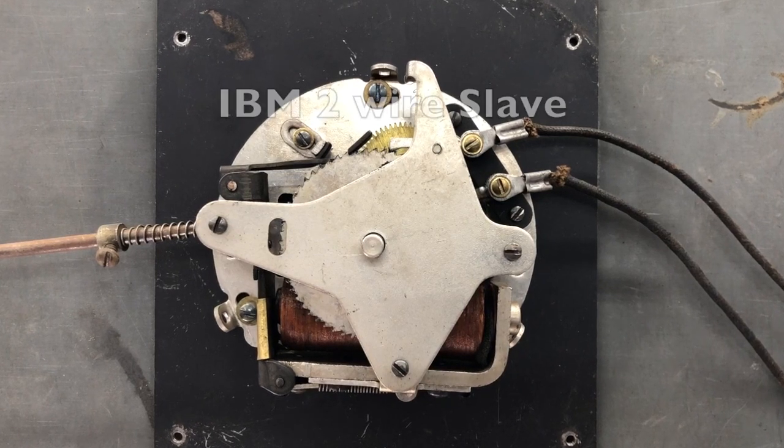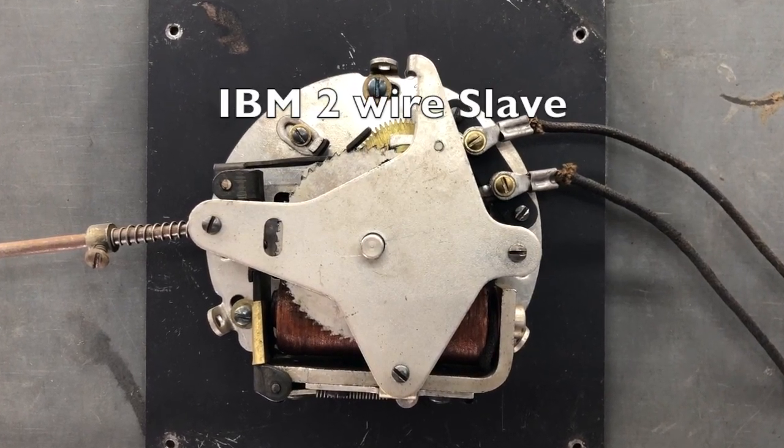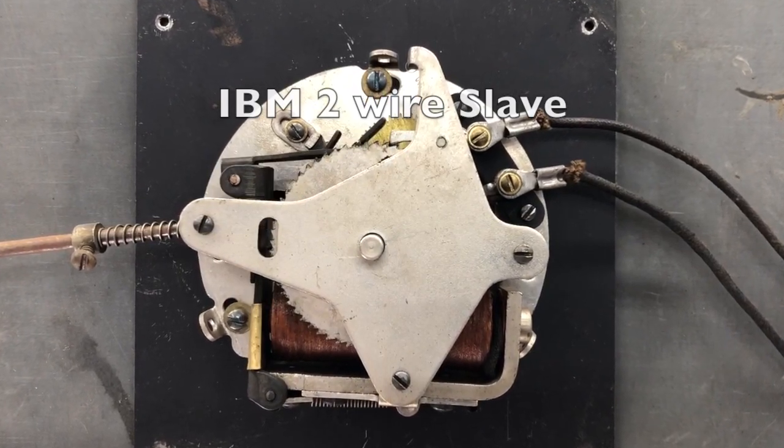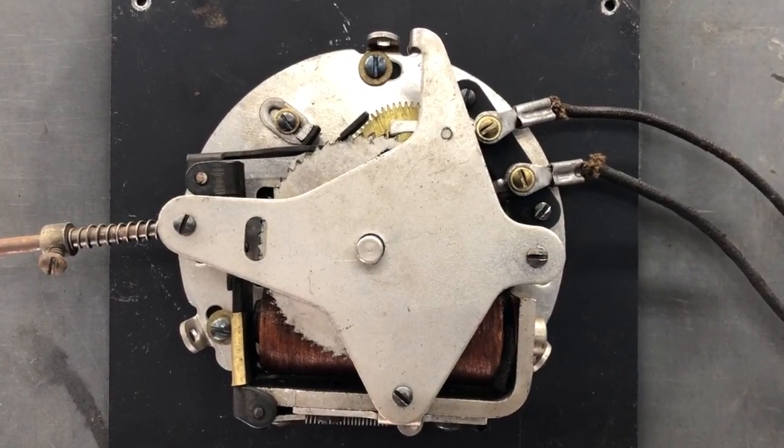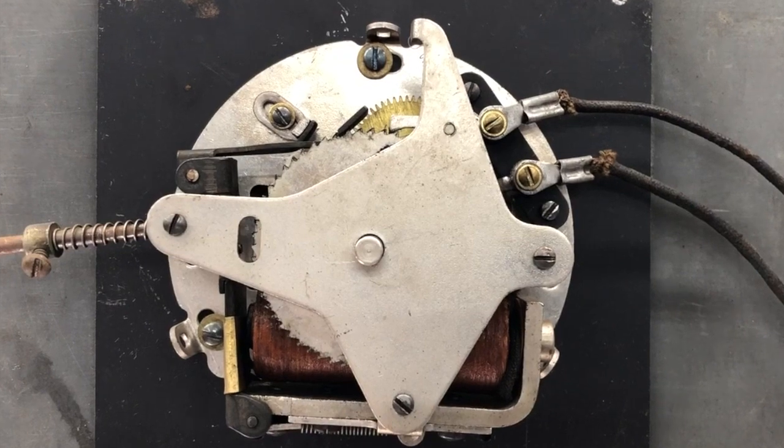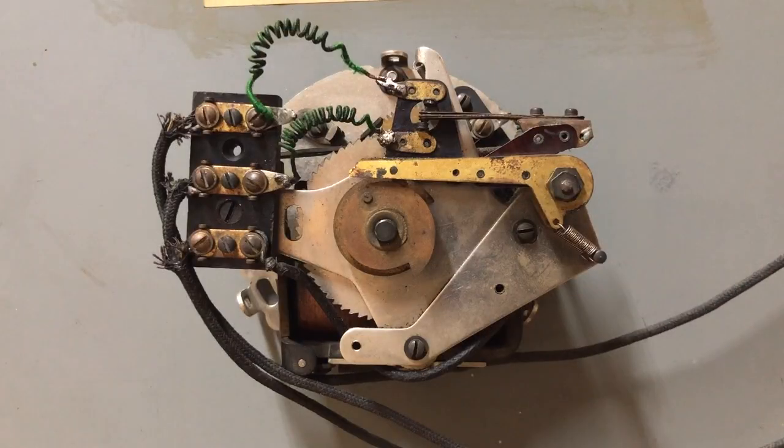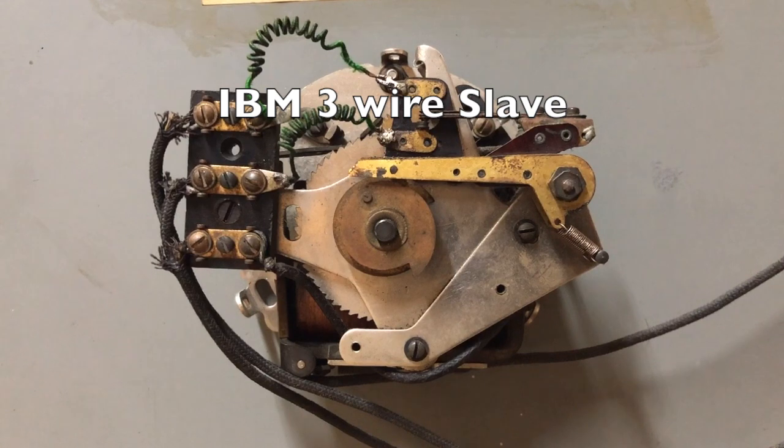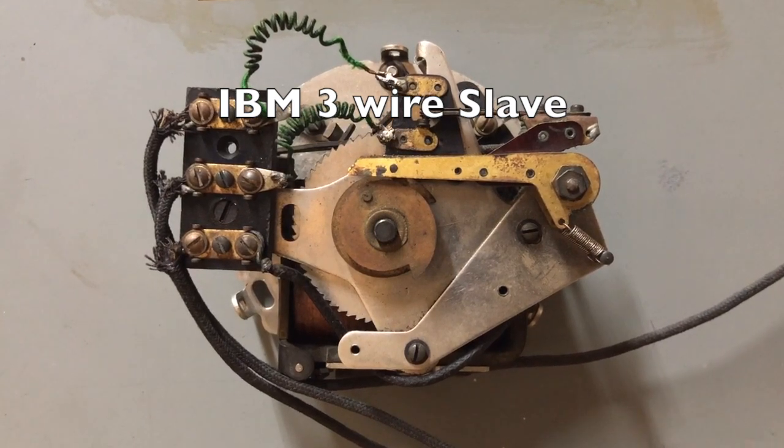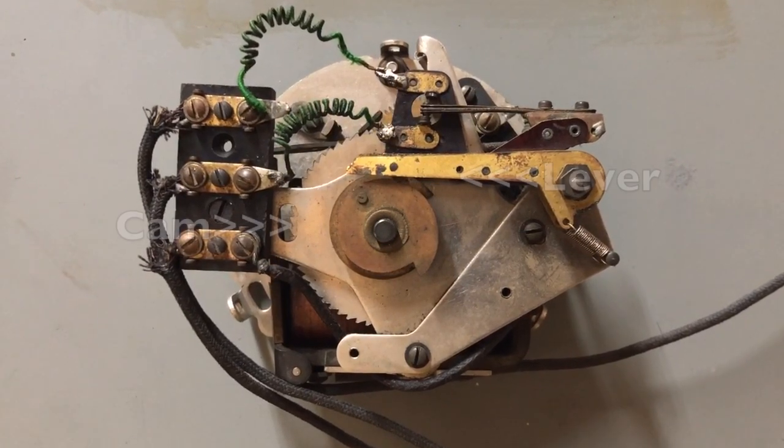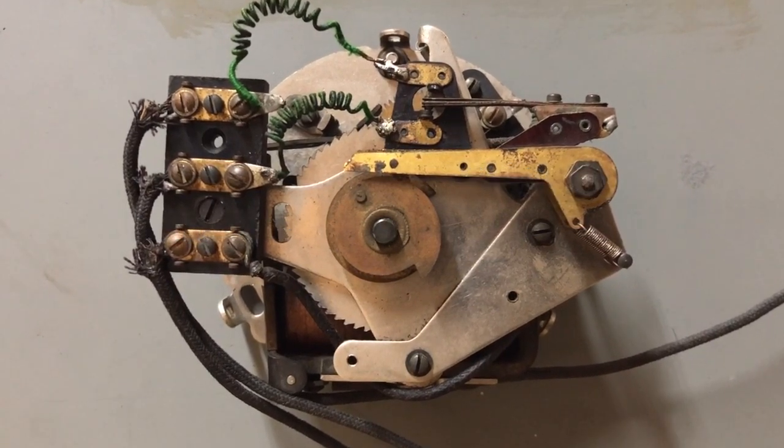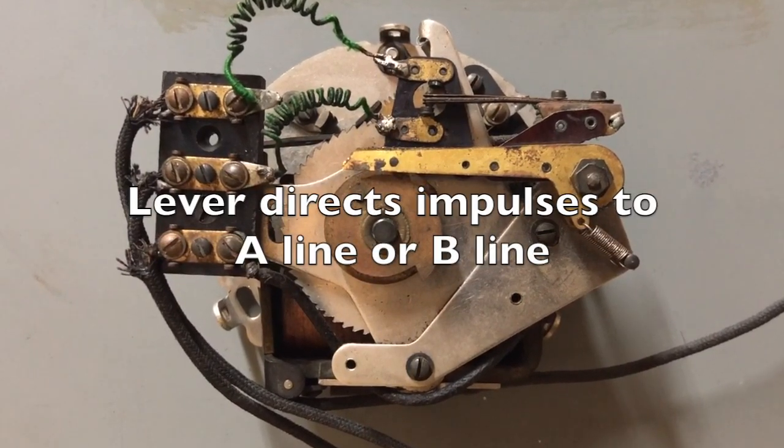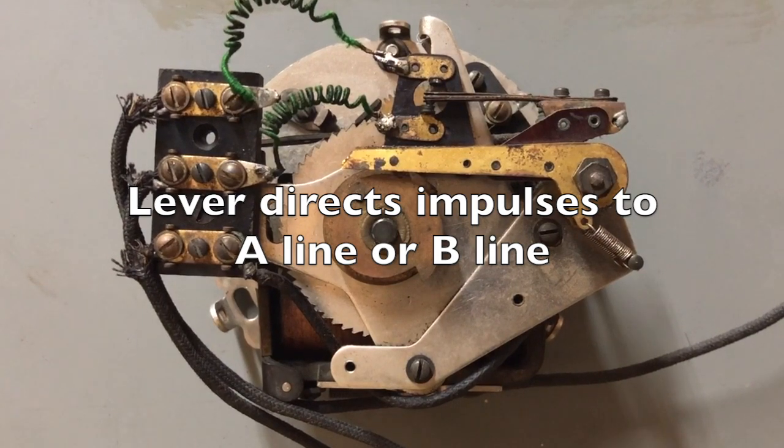The earliest IBM slaves were connected to the master via a pair of wires and the hands were advanced one minute each time they were impulsed. If the power failed the slave fell behind. This early version IBM three wire slave is the first reliable self-correcting slave. Levers resting on the cam on the center shaft directs impulses either to the A line or the B line.